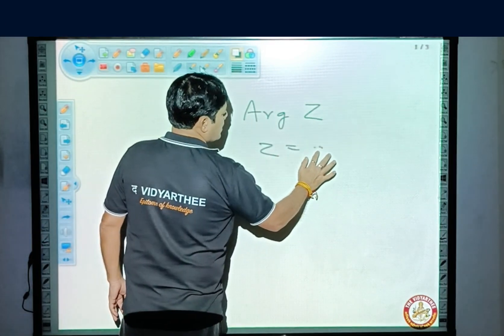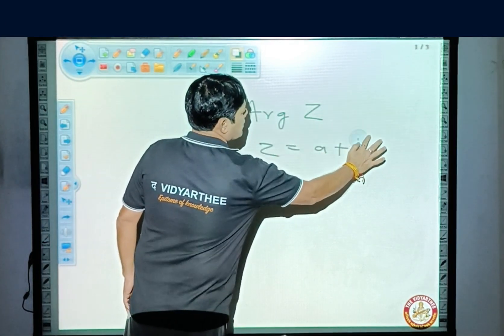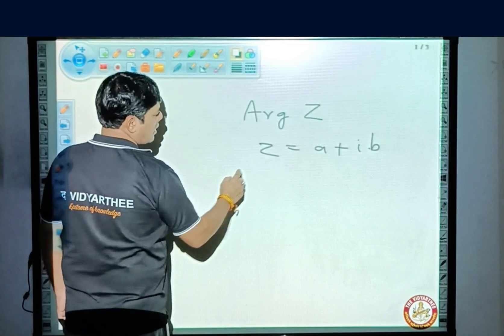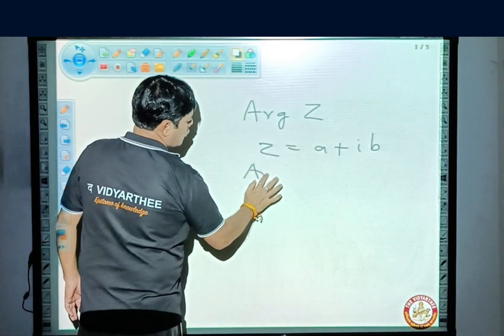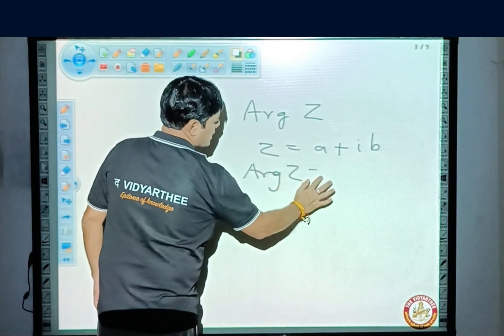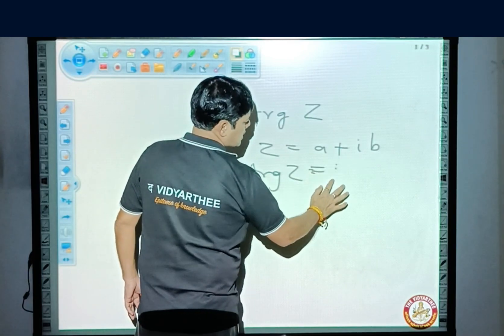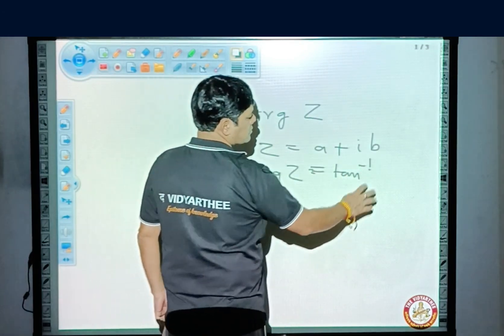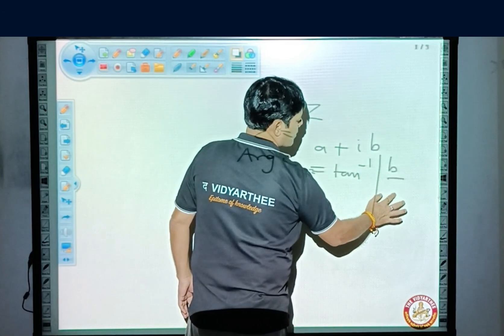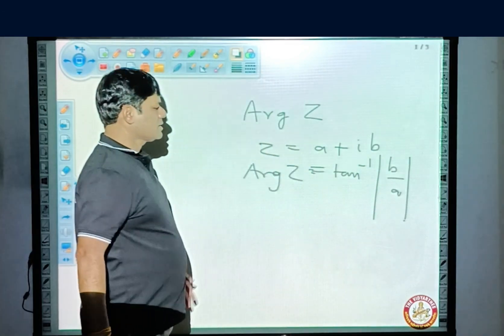Let me suppose a complex number is in a plus ib form. Then the argument of z is tan inverse mod b by a. This is the argument.